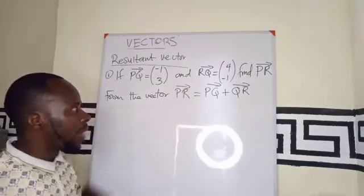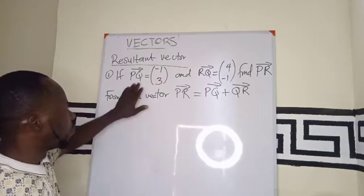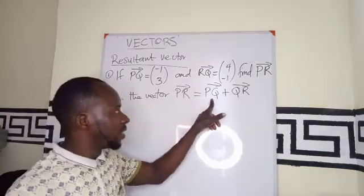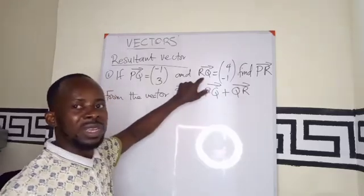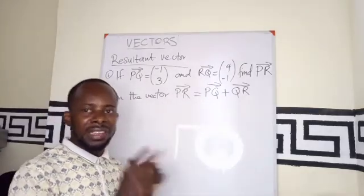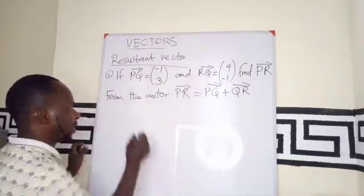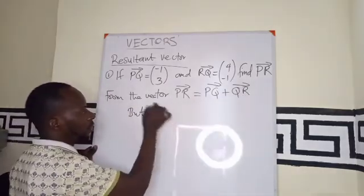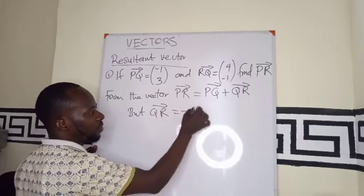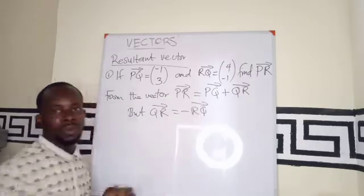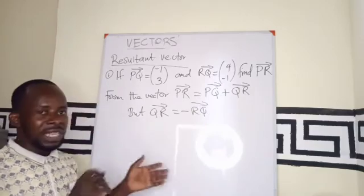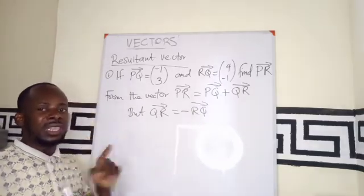Now we look back to the question and see the values we are giving. PQ has been given to me, so I will use it. QR is not given to me. I am giving the reverse, that is a negative vector. So QR is a negative of RQ, a negative vector. We talked about that in the previous video. A negative vector is just a change in direction.